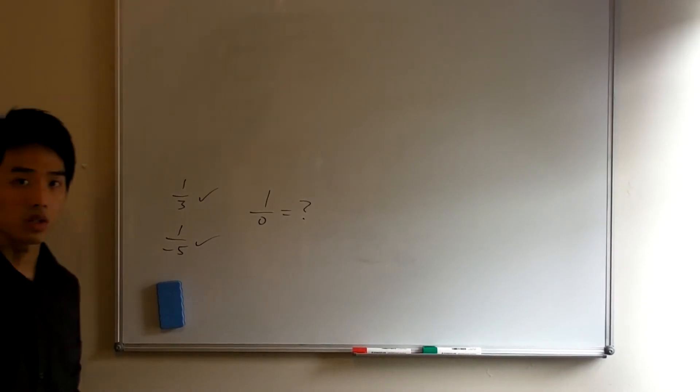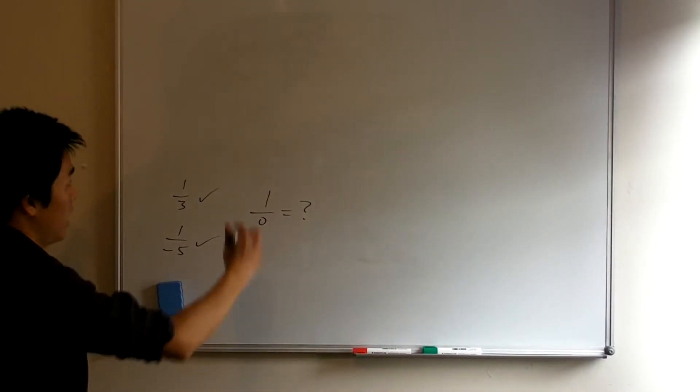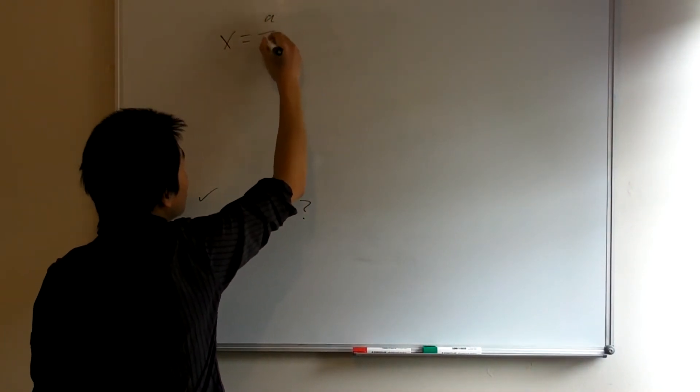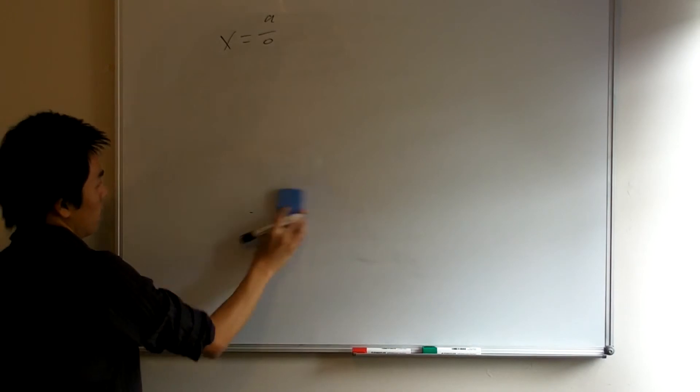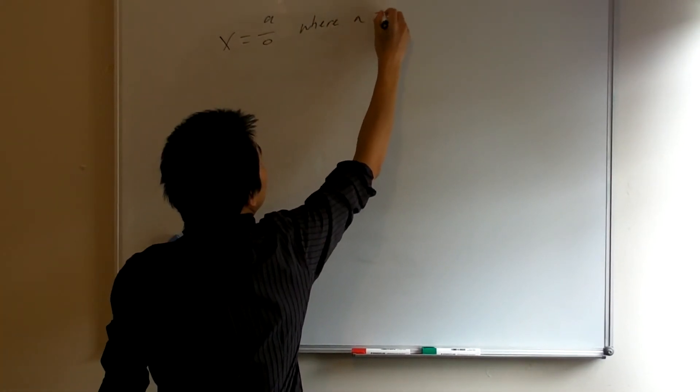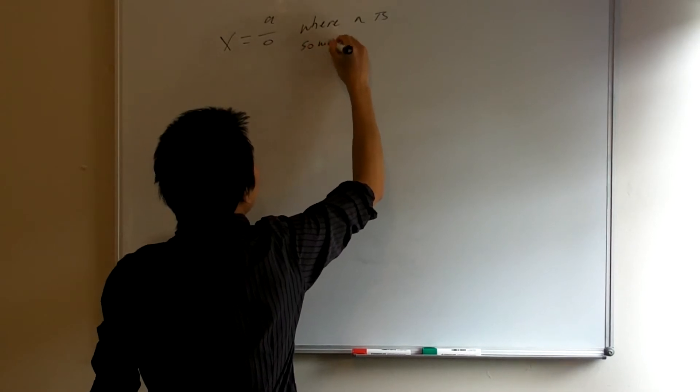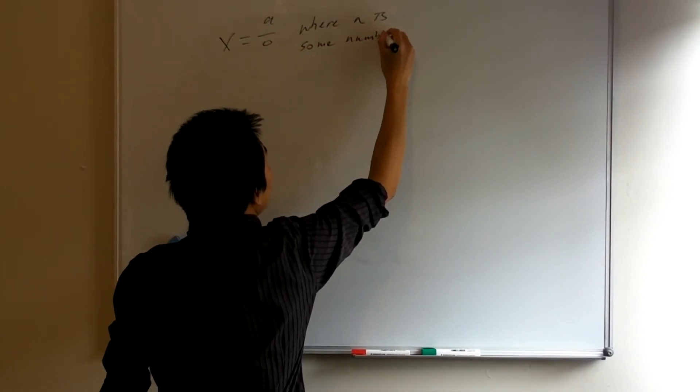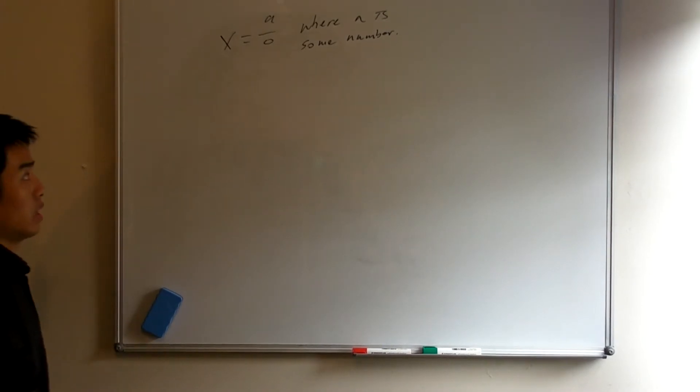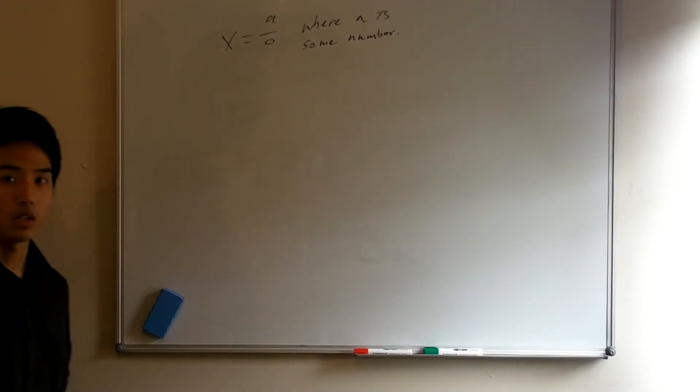Well, right now we don't have a definition for what this thing is. But suppose we do, suppose we have a definition, and I'm going to symbolize that definition with the letter x, whatever it may be, where a is some number. So let's try and examine this definition through different cases.